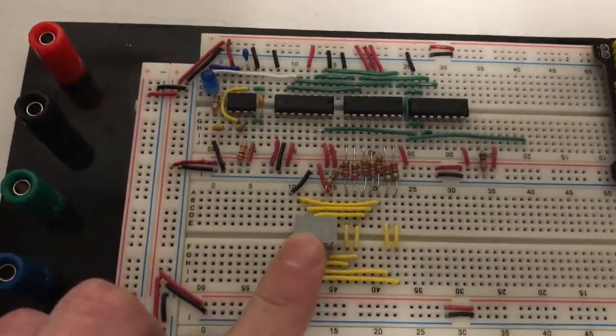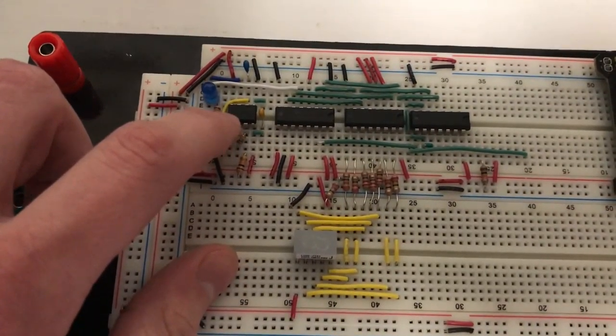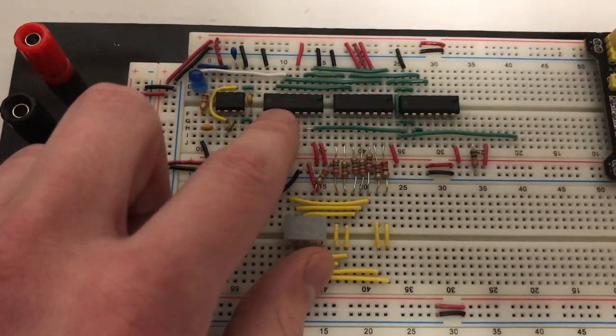So here's my 7-segment display, here is the 555 timer clock from Lab 1. This is the decoder for the display, and this is a 4-bit counter.